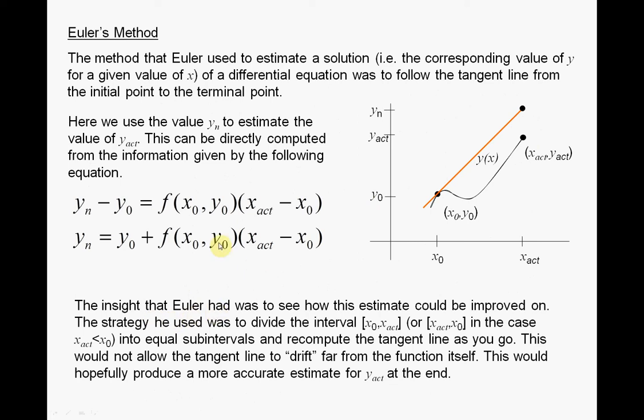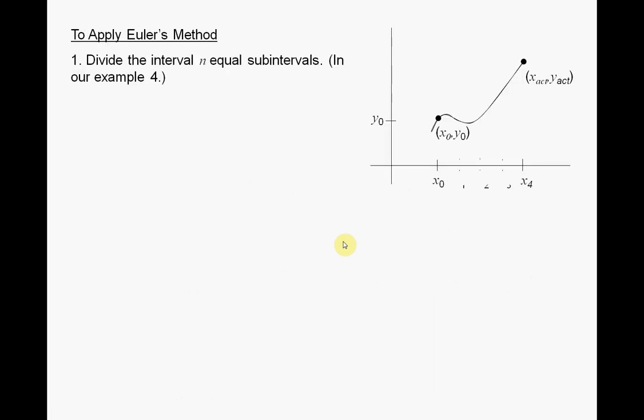Now, as I mentioned here, Euler said that if you broke this into a number of steps, you get a number of tangent planes, and hopefully you'll end up with a better answer. So this is done graphically on the next slide.